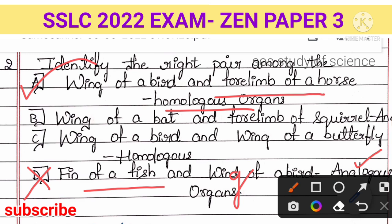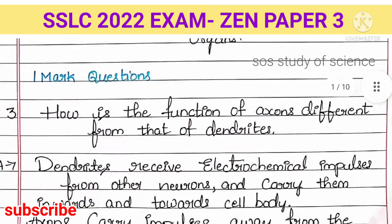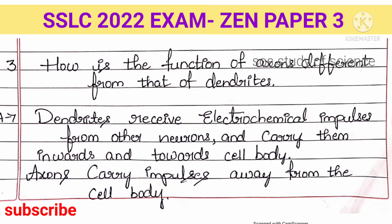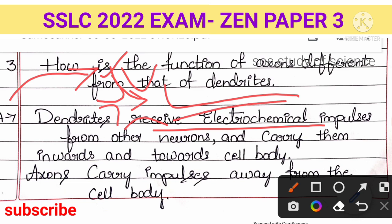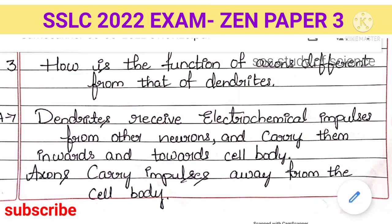Next question: how is the function of an axon different from dendrites? Dendrites are the branch-like structures that receive electrochemical impulses from other neurons and carry these impulses towards the cell body. The axon, present at the other region, carries impulses away from the cell body. Dendrites carry impulses towards the cell body, but the axon carries them away — that is the key difference between axon and dendrite.